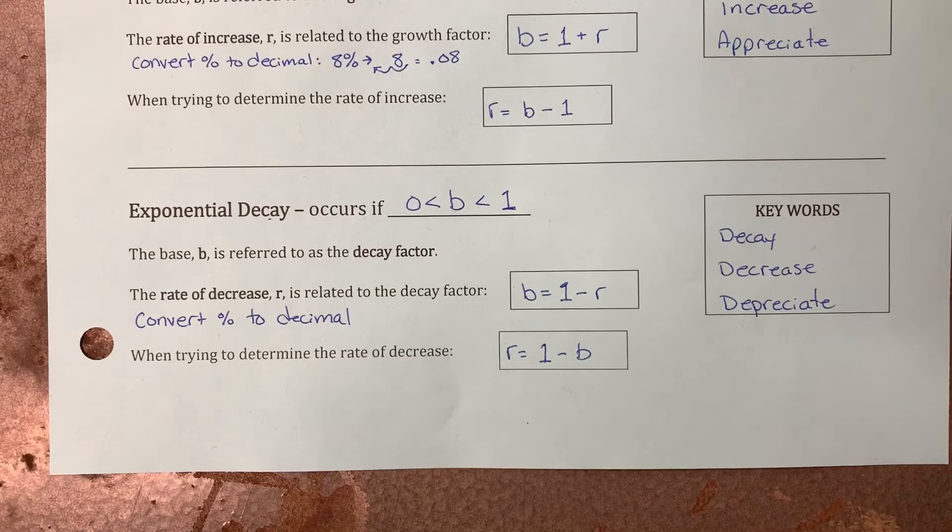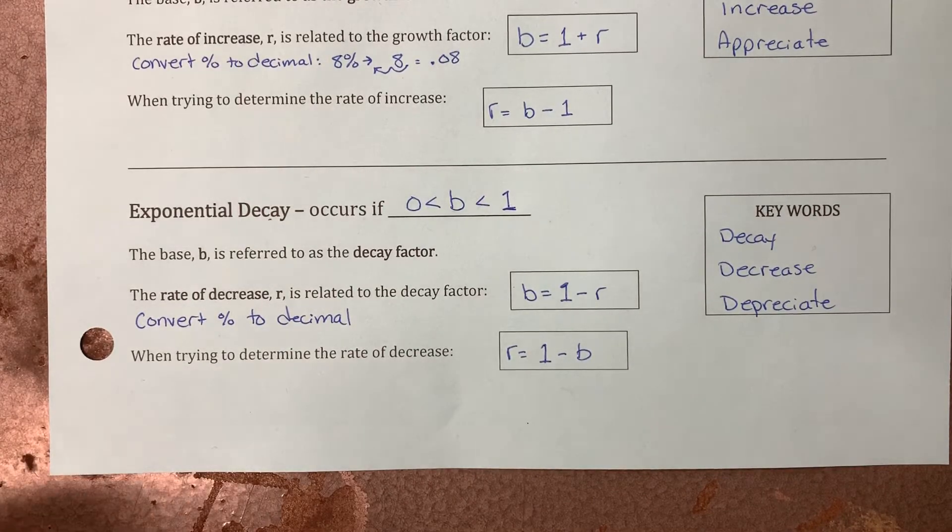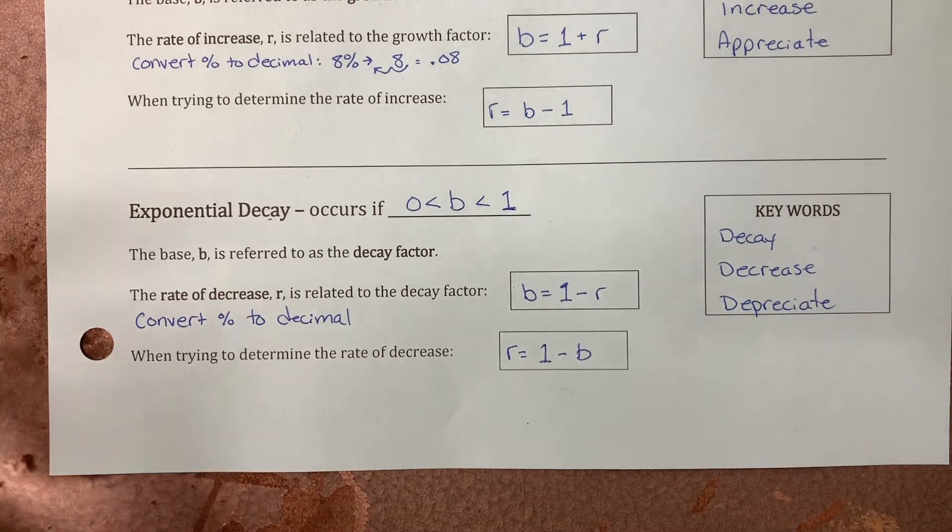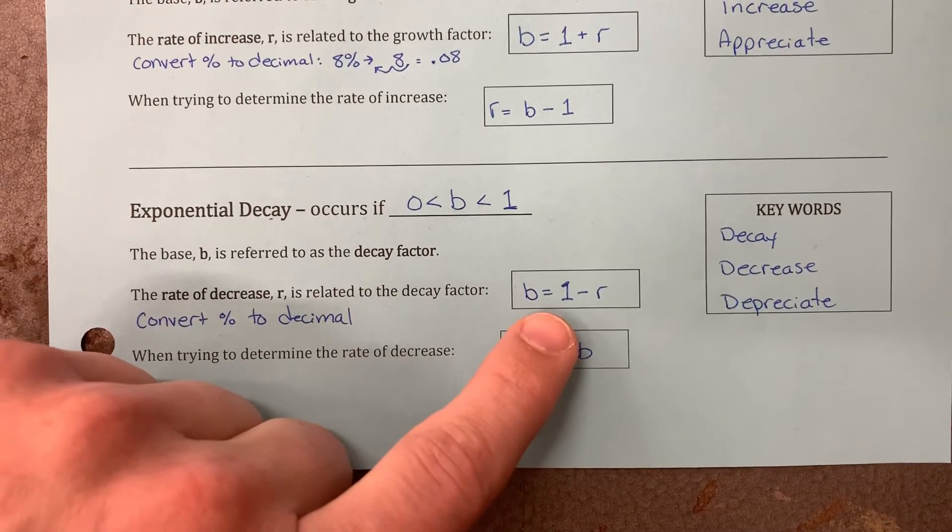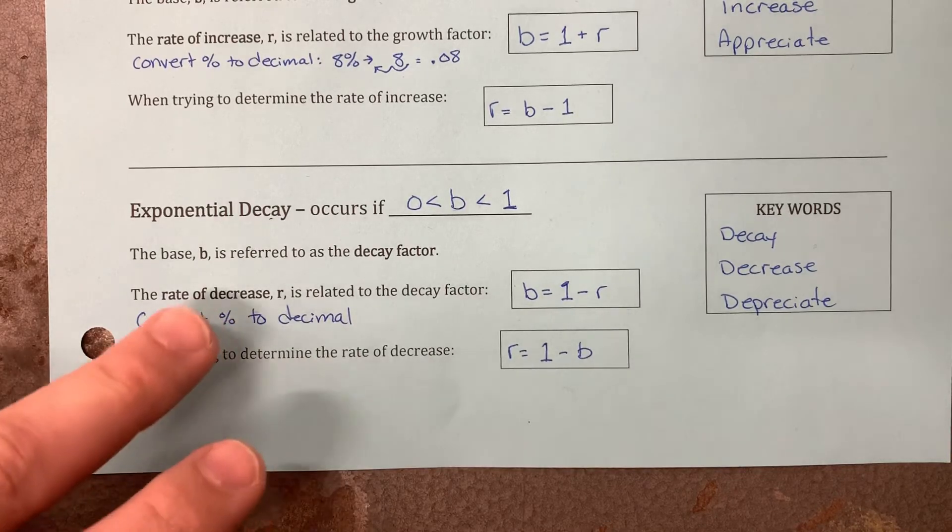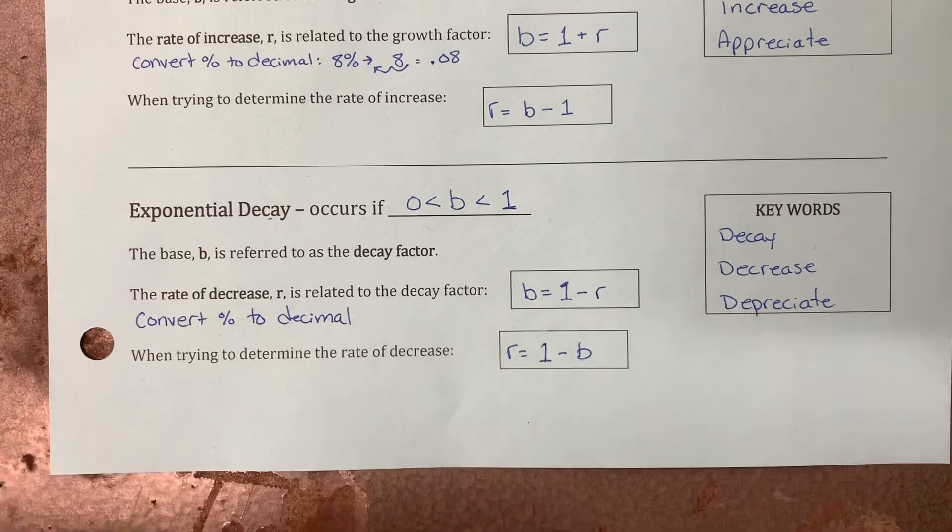Decay. That's when the b value is something less than 1, but it's still got to be greater than 0. So, it's anything between the range of 0 and 1, but not including the 0 or the 1. And then here are your examples of how to find the b value. It's going to be 1 minus the rate. Don't forget to convert it from a percent to a decimal. And then if you were given an equation, here's how you would figure out the rate. And here are your key words.